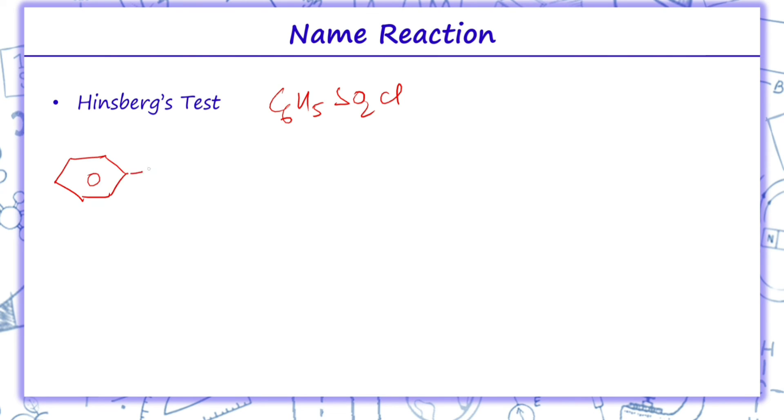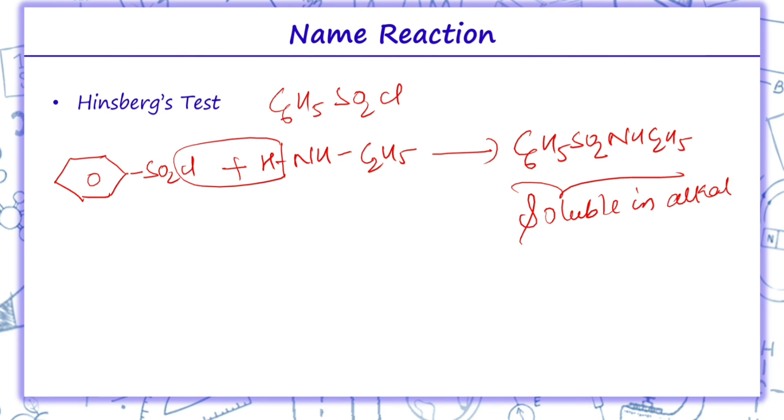So here we have C6H5SO2Cl which reacts with primary amine, that is C2H5NH2. So HCl is removed and we get C6H5SO2NHC2H5. This is ethyl benzene sulfonamide. This product is soluble in alkali.